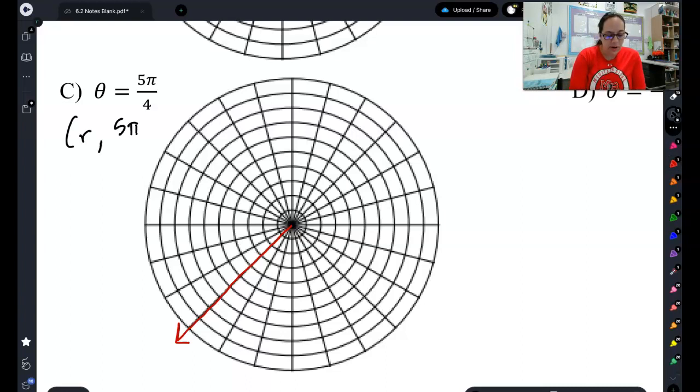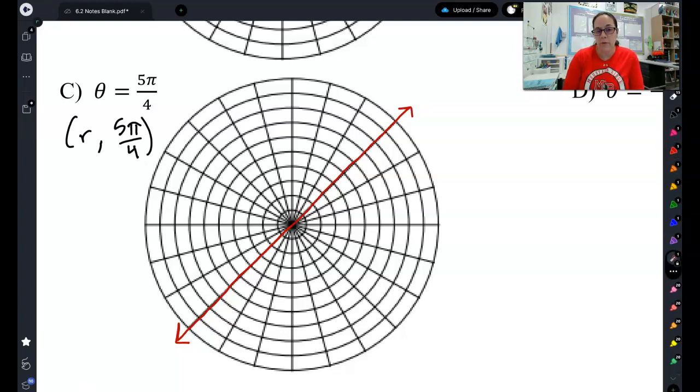However, when I go to graph this as a point, r can be anything it wants to be, meaning r can be positive or negative. So this is the line if our radius is positive. But remember, if the radius is negative, all that does is put it across the circle. So then I've also got this half of the line. And that would give me the graph of theta equals 5 pi fourths.